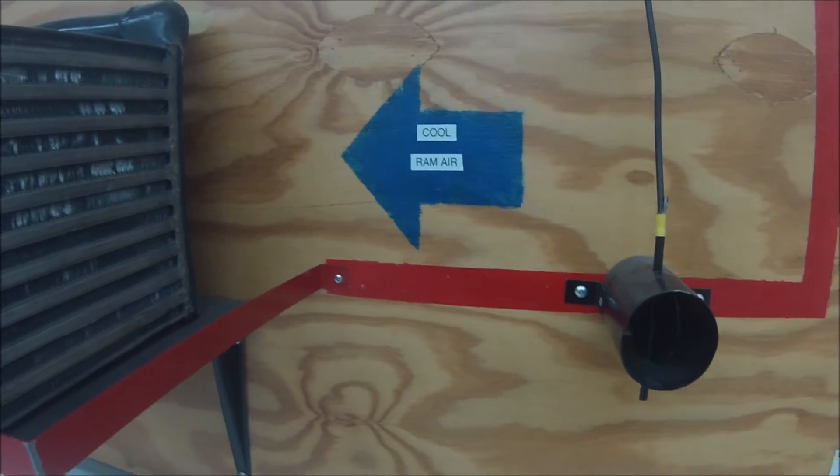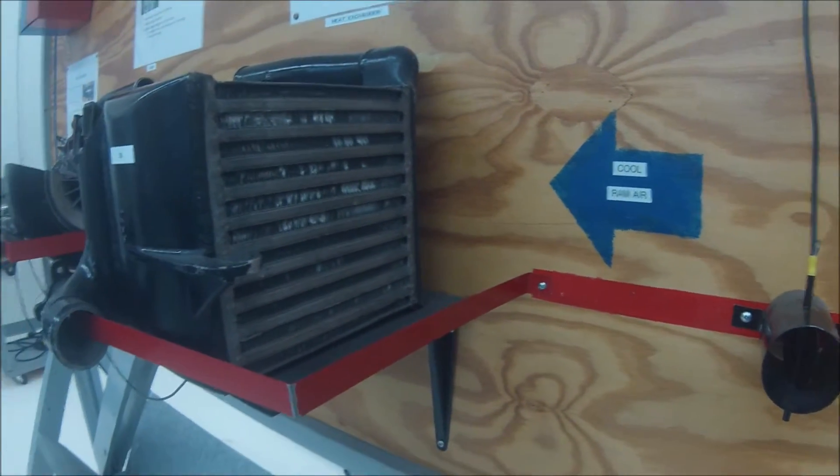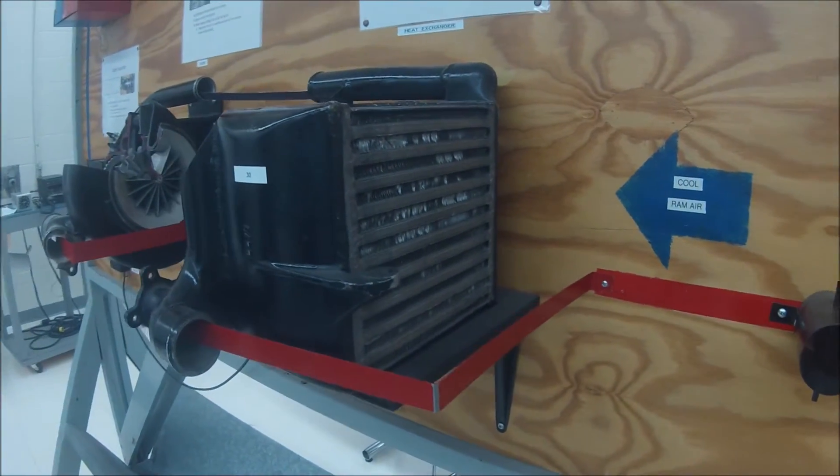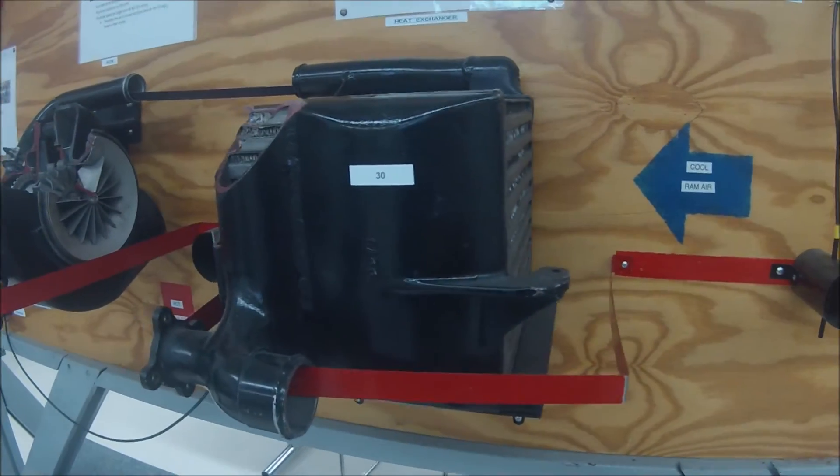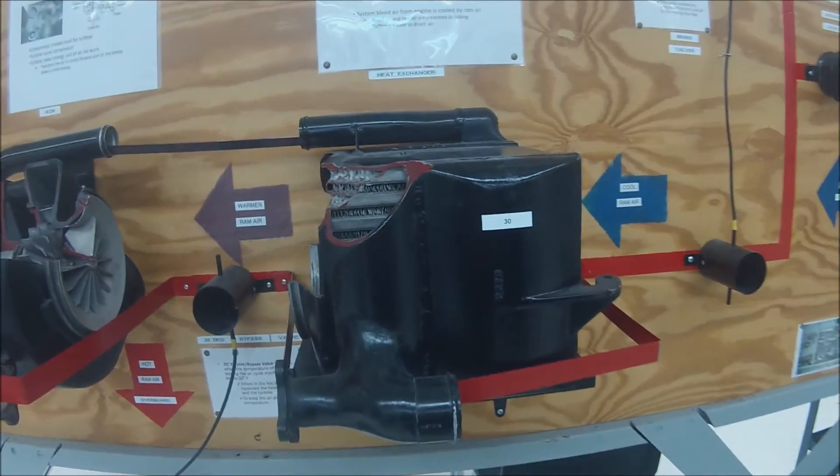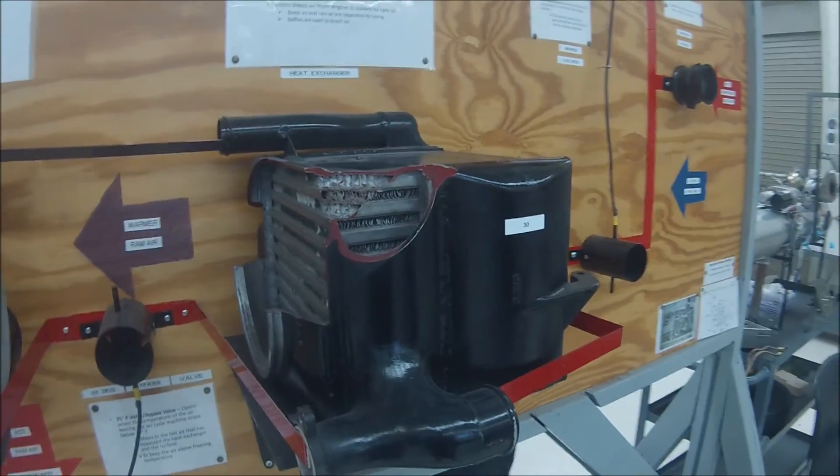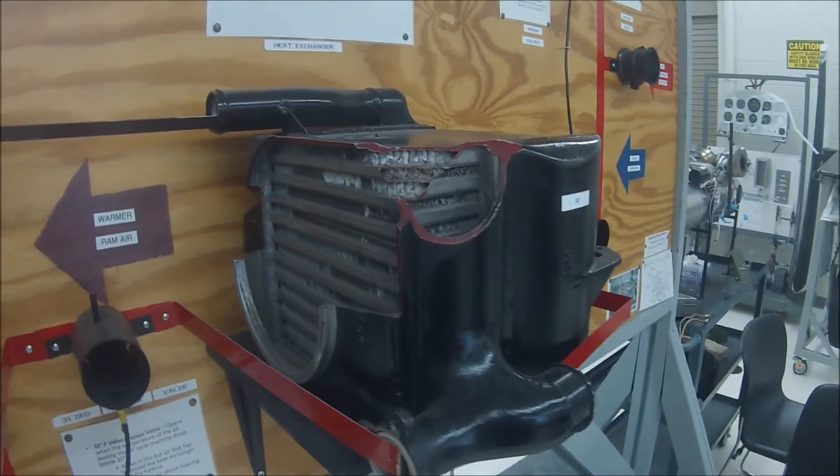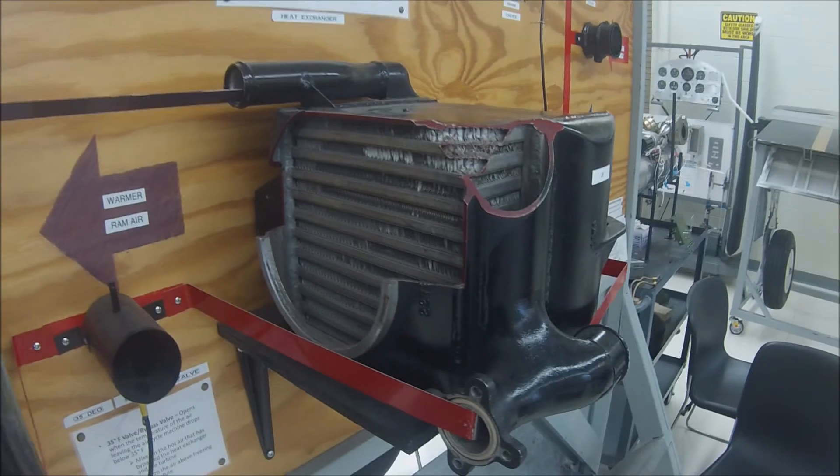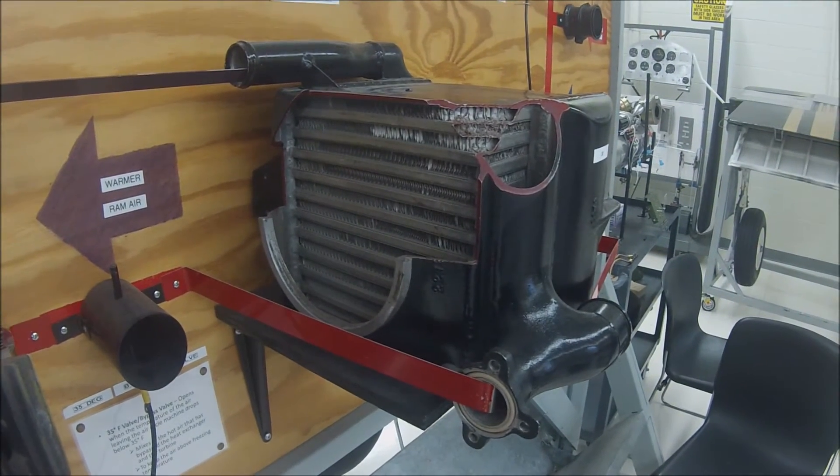Next is the heat exchanger. The system bleed air from the engine is cooled by ram air. The heat exchanger supplies outside air via the ram air inlet. Both bleed and ram air are separated by tubing. The baffles direct this air and decrease the temperature.